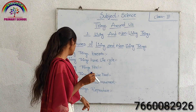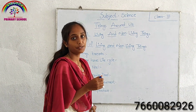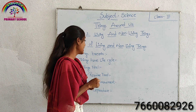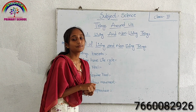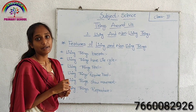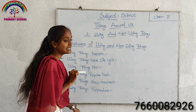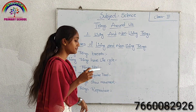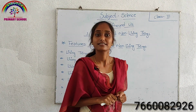Plants reproduce from seeds produced by an adult plant. Non-living things do not have this process of reproduction. Thank you everyone.